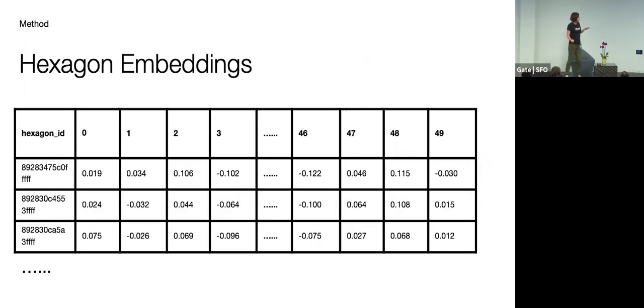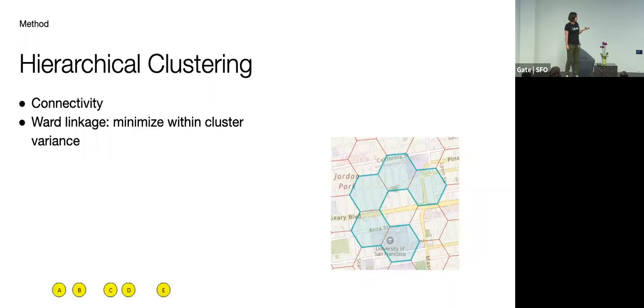Alright, so with that, we can apply this embedding framework to our hexagons. And eventually we ended up with a matrix that, it's not really a matrix, a table that for each hexagon UID, we have, this is a 50 dimensional real number to describe this hexagon. And now we have this featurization, we can then apply clustering methodologies. So we're using a canonical hierarchical clustering, but there are some modifications that we need to make.